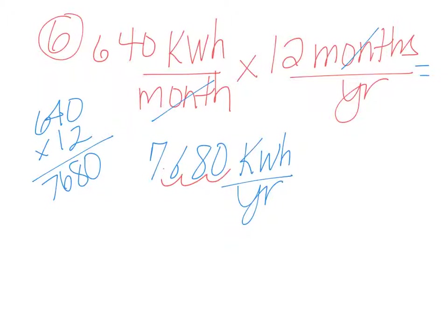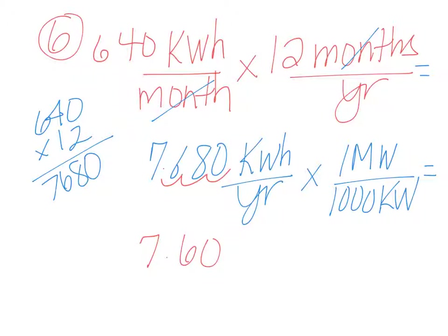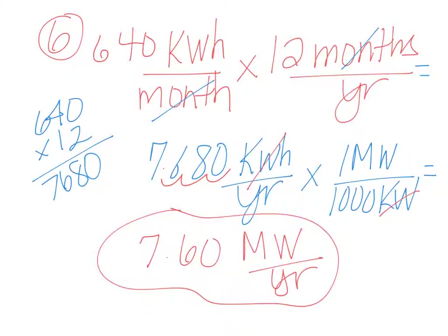So you can move the decimal place over by 3. Or you can also know that 1 megawatt is equal to 1,000 kilowatts. And so either way works, and you get the same answer, which is 7.6 megawatts per year. So my kilowatts cancel, and this is my answer right here.